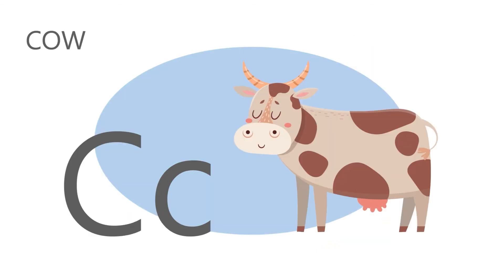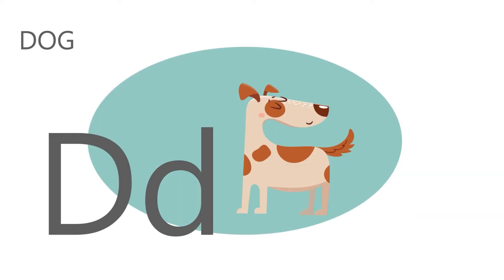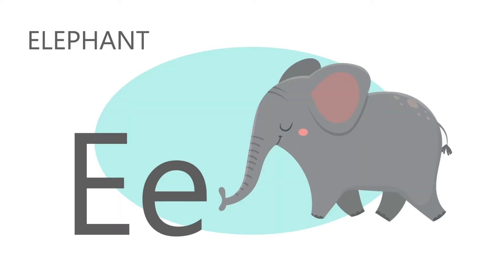C is for cow. C, c, cow. D is for dog. D, d, dog. E is for elephant. E, e, elephant.